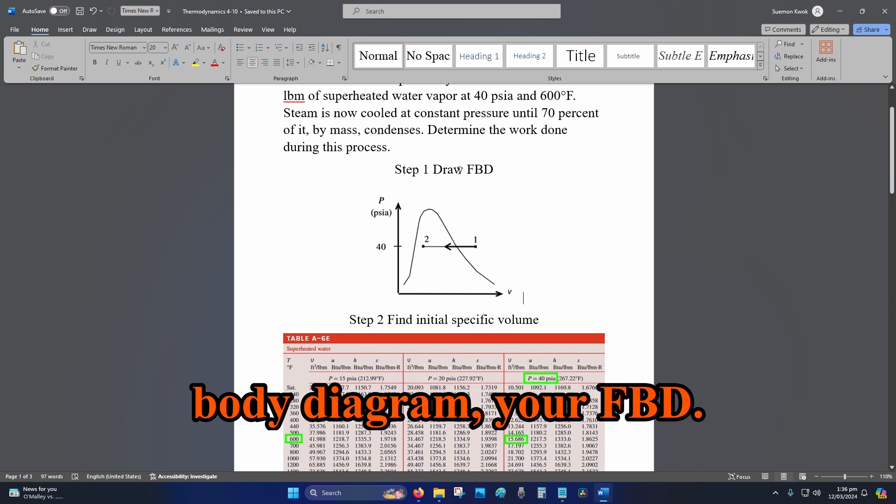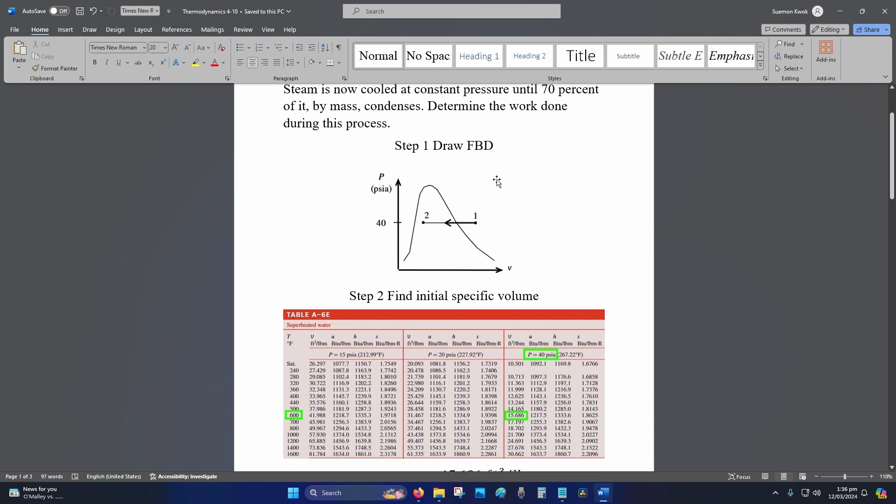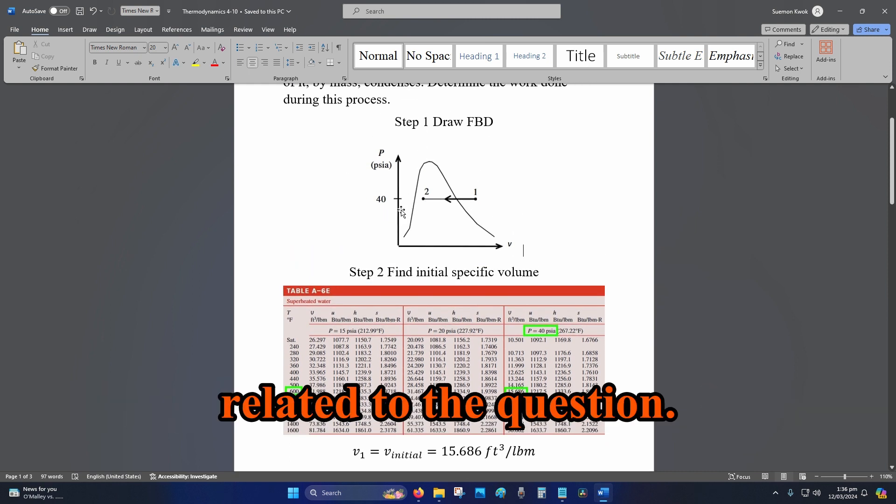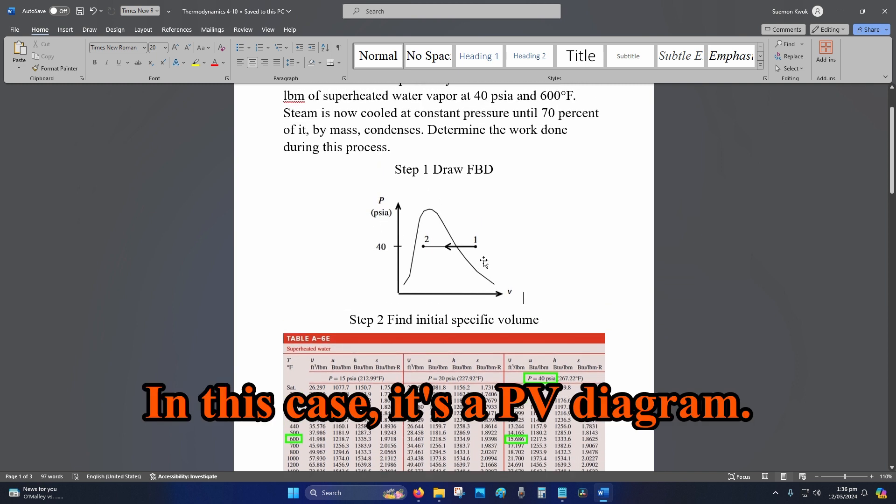Step 1, draw your free body diagram, your FBD. You get a point for drawing a picture related to the question. In this case, it's a PV diagram.